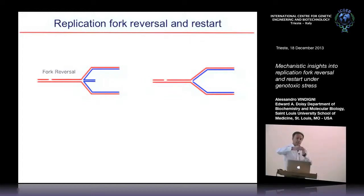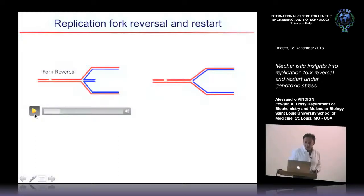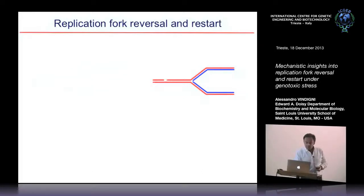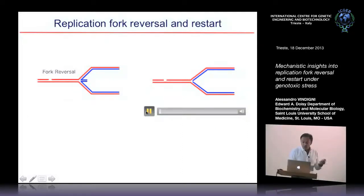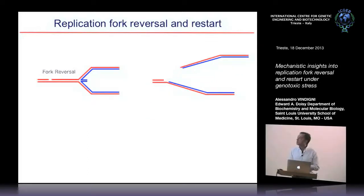Essentially, when there is a lesion ahead, the replication fork goes back. The leading and lagging strands detach from the complementary duplex and pair together into a chicken-foot structure — no new DNA synthesis is involved, just pairing of complementary strands. This gives time for the lesion to be repaired, so replication can resume normally. If this mechanism doesn't work, the fork would collide with the lesion, leading to a double-strand break, which is of course toxic for the cell.